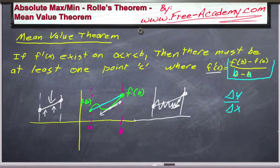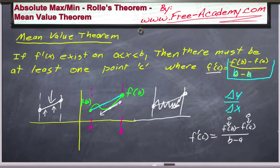The only difference between Rolle's theorem and the mean value theorem is that if you plug in the condition f′(c) = (f(b) − f(a)) / (b − a), and we already know f(b) = f(a) = 0 in Rolle's theorem, then you get zero over some number, which equals zero. When the first derivative equals zero, you have a maximum or a minimum. So Rolle's theorem is really just a specialization of the mean value theorem. We'll do plenty of practice problems to make sure you get the hang of it.